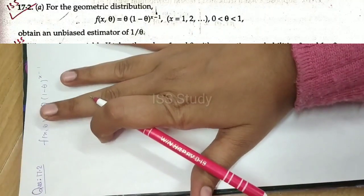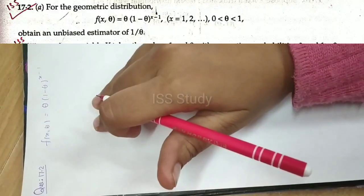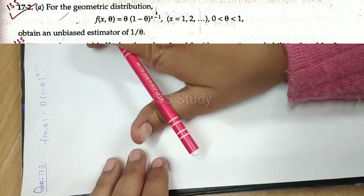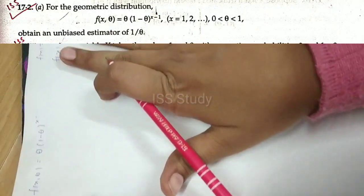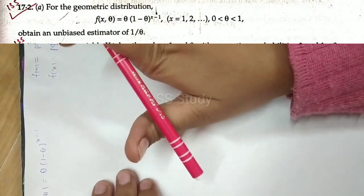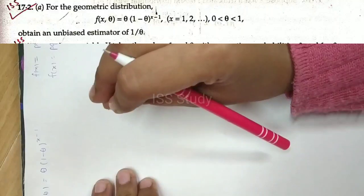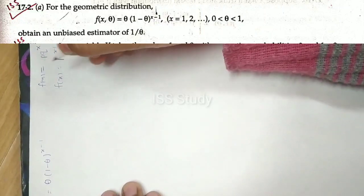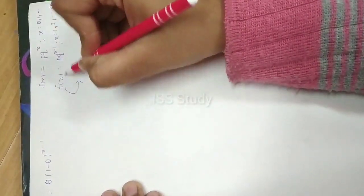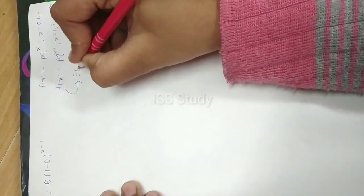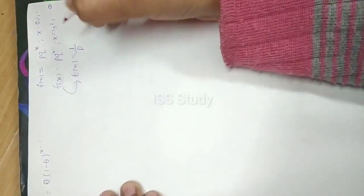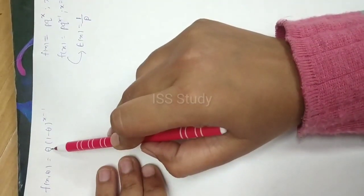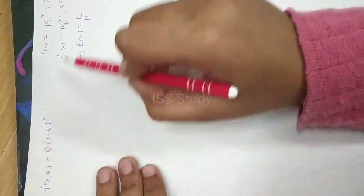Now, what do we have to do? We have to find the unbiased estimator of 1 upon theta. If you are studying the Pascal geometric distribution or geometric distribution, then the mean and variance should already be learned. The mean of the Pascal geometric distribution is 1 upon p. If we relate to this form, the p value is theta, which means the mean will be 1 upon theta.